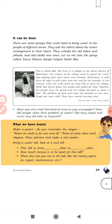This is Darky Mike. She lives in a village in the Alwar district of Rajasthan. The women of the village used to spend the entire day looking after their home and animals. Sometimes it took them all night to pull water from the well. When the wells dried up, they had to leave the village. Darky Mike heard about a group working on water solutions. They listened to this group and asked them for help.